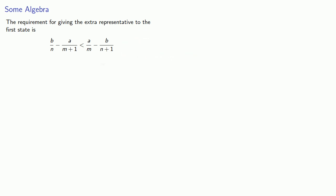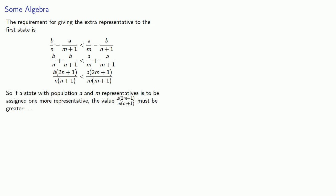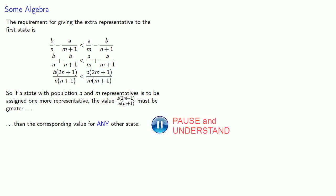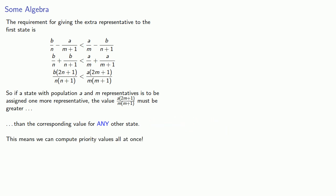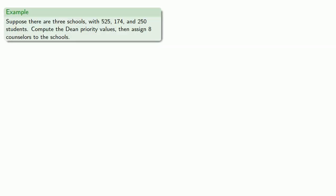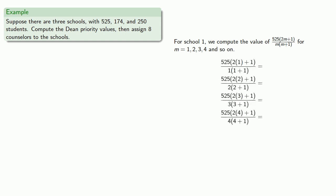We can do a little bit of algebra. If a state with population A and M representatives is going to be assigned one more representative, then this quantity must be greater than the corresponding value for any other state. This means we can compute the priority values all at once. Going back to our school examples, we can compute the Dean priority values and assign the eight counselors to the schools. For school one, we compute population times (2M+1) divided by M times (M+1), letting M equal 1, 2, 3, 4, and so on.